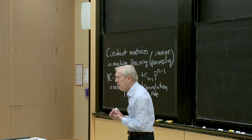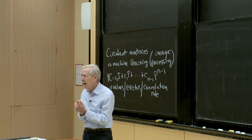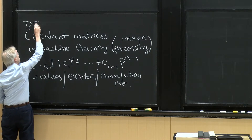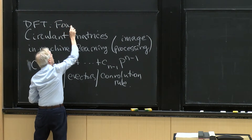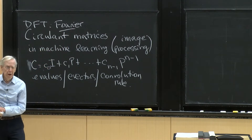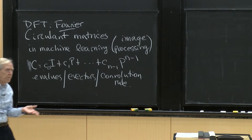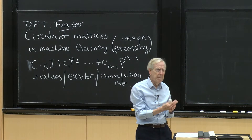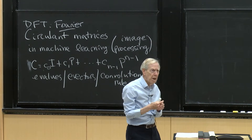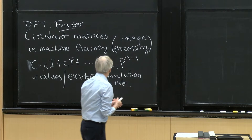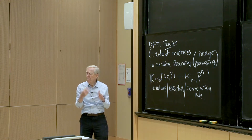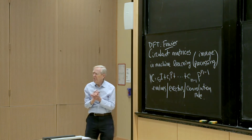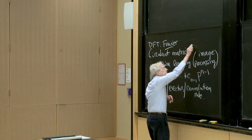There are topics like circulant matrices that I'm not going to be able to give you a problem set about. But of course, these are closely connected to the discrete Fourier transform. The discrete Fourier transform is, as you know, a very, very important algorithm in engineering and in mathematics everywhere. Fourier is just a key idea.